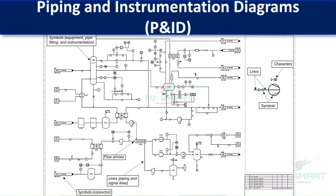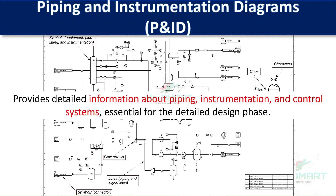Piping and Instrumentation Diagrams, or P&IDs, are more detailed than PFDs. They include all the piping, instruments, and control devices in a system. They show the process flow, but also the detailed instrumentation and control architecture.